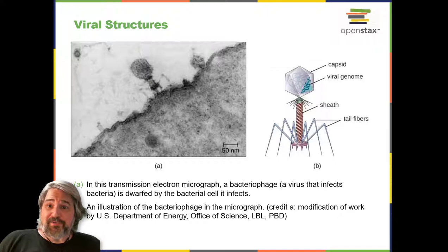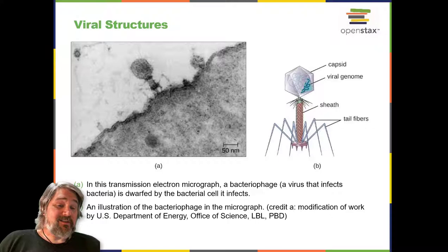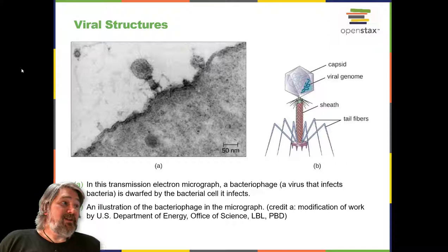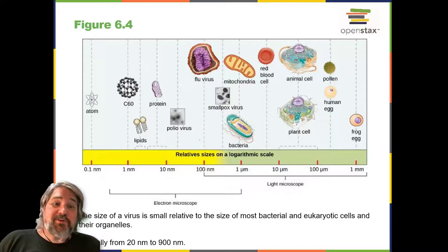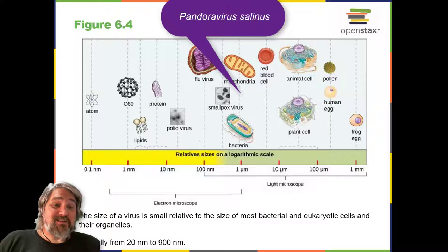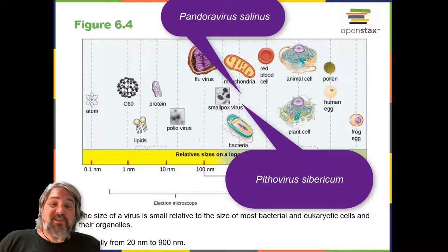Viral Structures: In general, virons—viral particles—are small and cannot be observed using a regular light microscope; they are much smaller than prokaryotic and eukaryotic cells. The size of a viron can range from 20 nanometers for small viruses up to 900 nanometers for typical large viruses. Recent discoveries, however, have identified new giant viral species such as Pandoravirus salinus and Pithovirus sibericum with sizes approaching that of a bacterial cell.